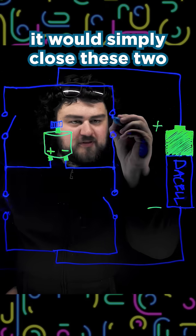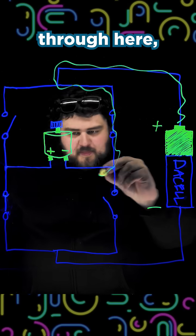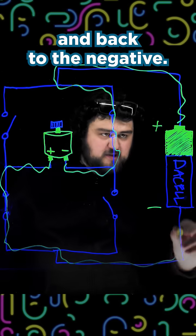it would simply close these two transistors here, and now we have electricity flowing through here, through the negative, then through the positive, and back to the negative.